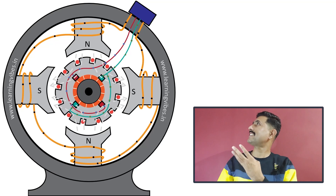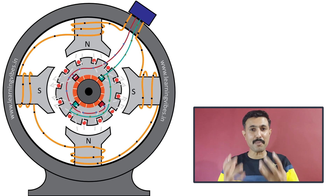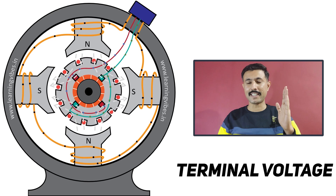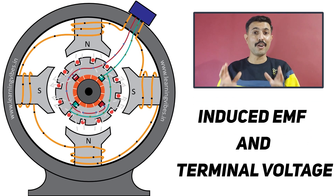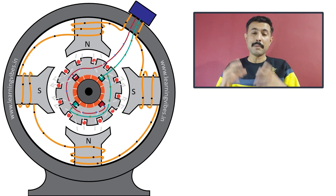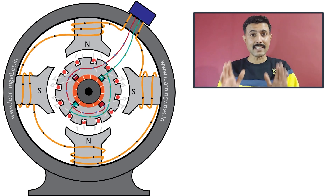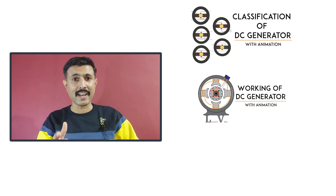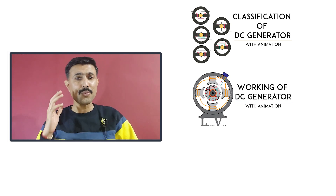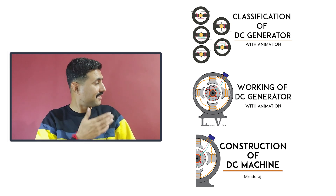This is a DC generator video where we are going to get the important relation between terminal voltage and induced EMF in a long shunt generator. There are various types of DC generators, and the classification of those DC generators we have seen previously. If you want to understand classification and working of DC generator with animations, or construction of generator with animations, you can check out those videos.